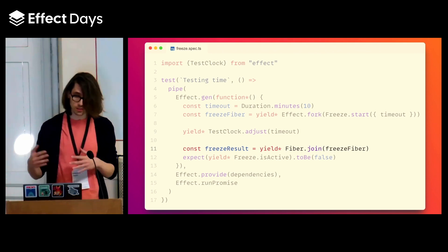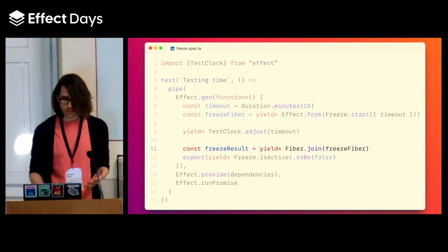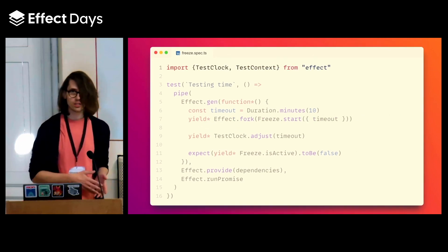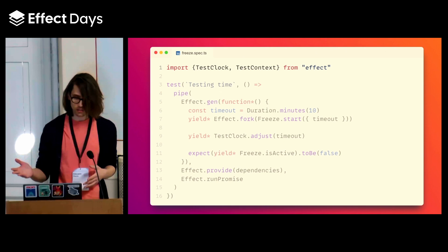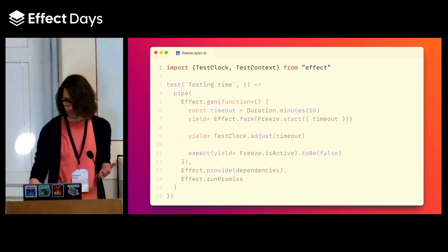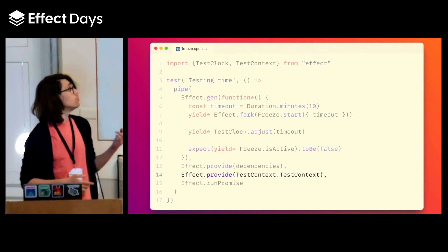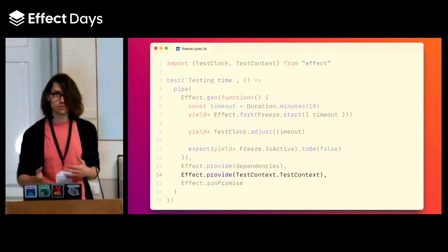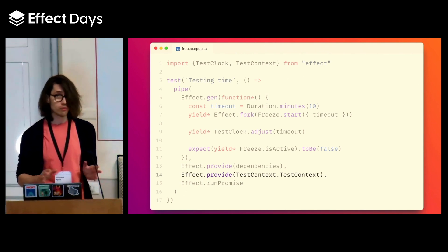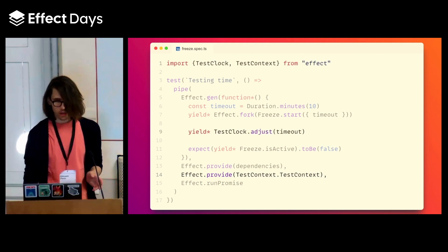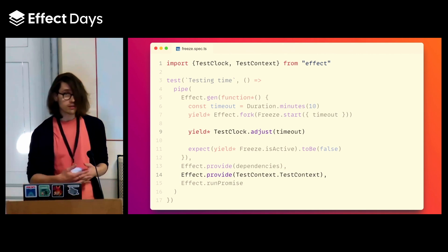So we know how to move time forward even when we are blocked by effects that are stuck waiting for time to move forward. The test is basically done — there's only one thing left. Since we are using the test clock, we have to provide it. Its implementation is part of the test context, so we have to import it and provide it. I used two provides here because it's easier to read for the example, but it's a regular layer — there is nothing special about it. And that's it: three lines to master time in Effect.